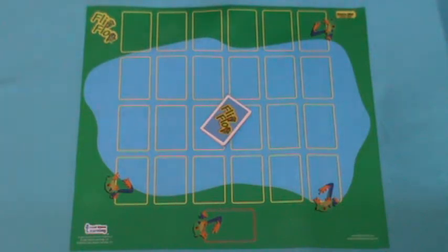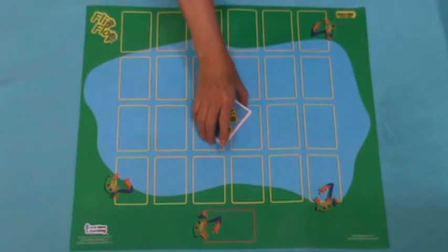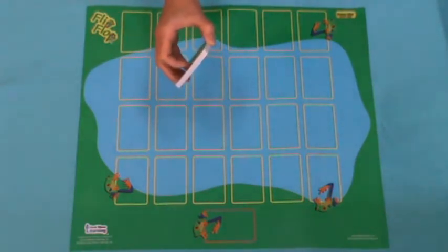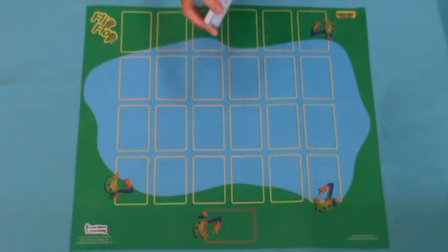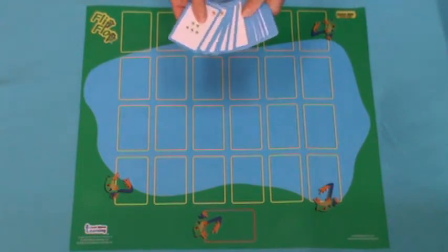Here's the game Say, Sort and Sequence. You will need a customized deck of 24 cards, which includes four categories, with six cards in each category.